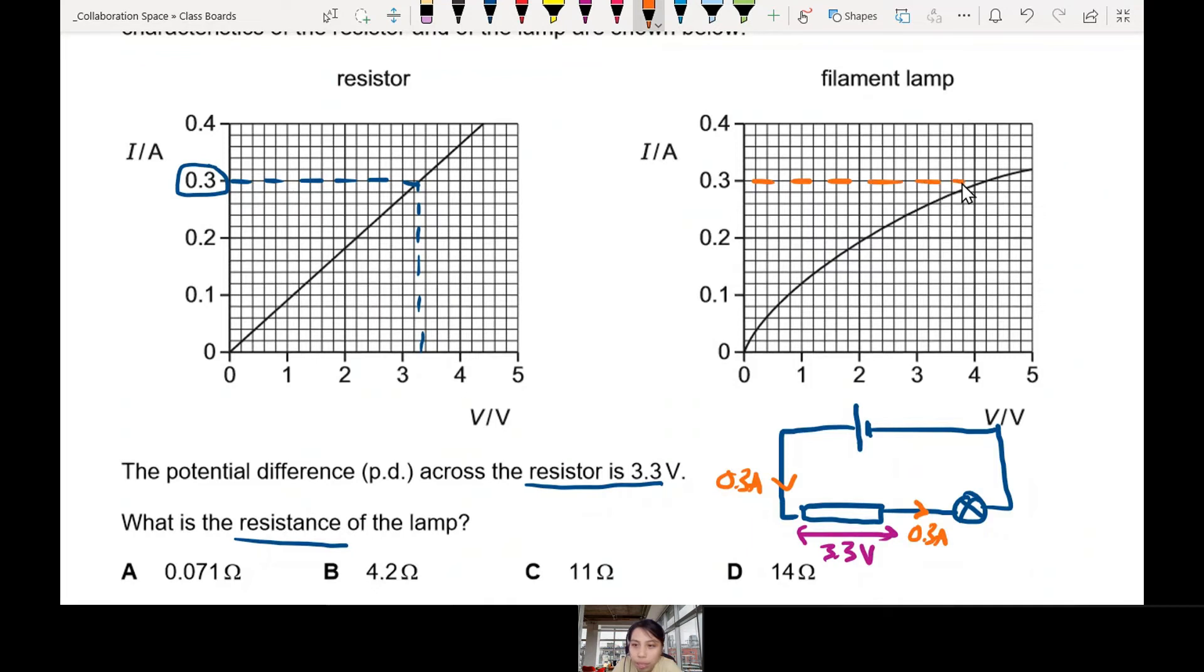What is the voltage or potential difference across the filament lamp? Check down. This looks like 4.2. So that means this lamp will have a potential difference of 4.2 volts. Nice. We are slowly unraveling the question.